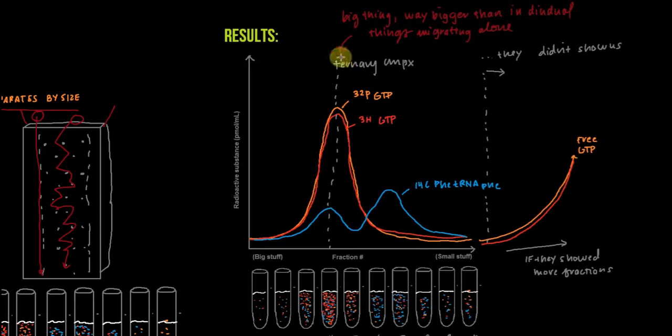And this represents the ternary complex. We're seeing a big thing coming off the column relatively early, and it contains both GTP and phenylalanine tRNA phenylalanine. Assumably, EF-T is also incorporated into this ternary complex in order for it to be a bigger thing than just the phenylalanine tRNA phenylalanine by itself. We're bigger than any individual things migrating alone, so we conclude that this is the ternary complex. I've tried to show you what this means in terms of fraction numbers, where we have a high concentration of each of these radioactive things in the area around where this ternary complex is forming.